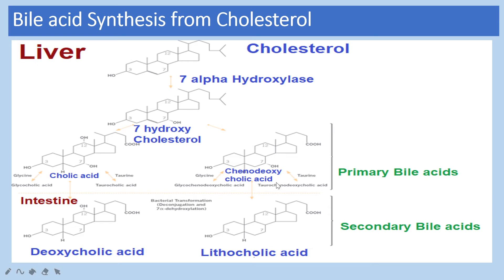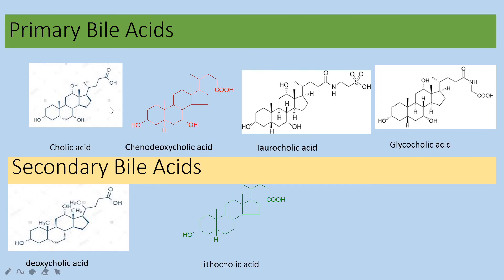Cholic acid and chenodeoxycholic acid are the primary bile acids. Deoxycholic acid and lithocholic acid are the secondary bile acids. These primary bile acids are converted into secondary bile acids in the large intestine, where they are acted upon by intestinal bacteria and undergo deconjugation and 7-alpha-dehydroxylation to produce secondary bile acids — deoxycholic acid and lithocholic acid.